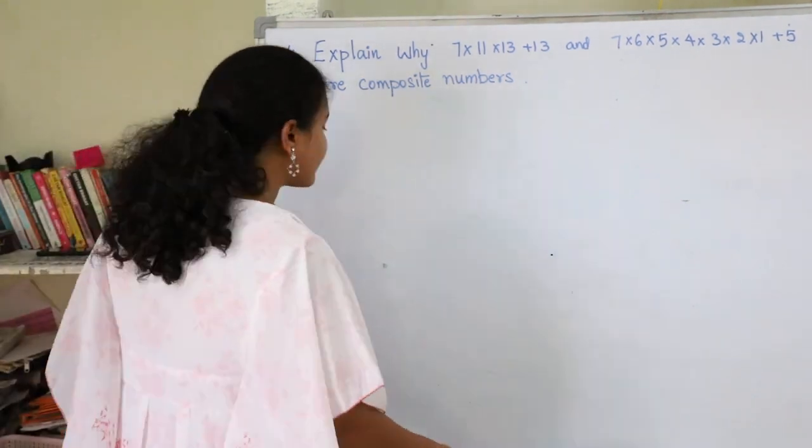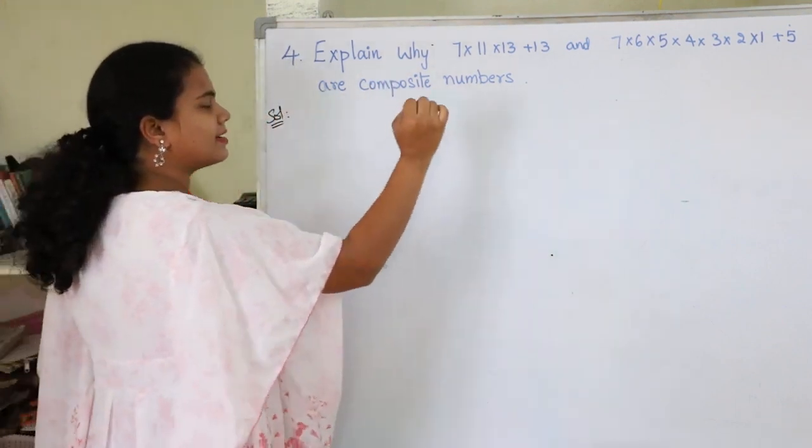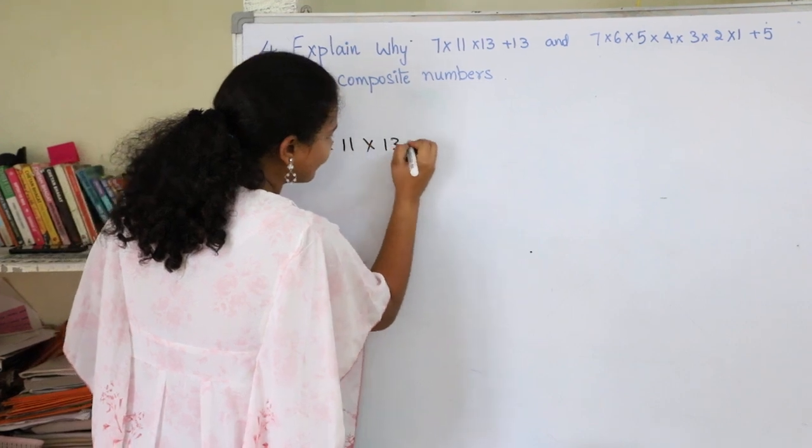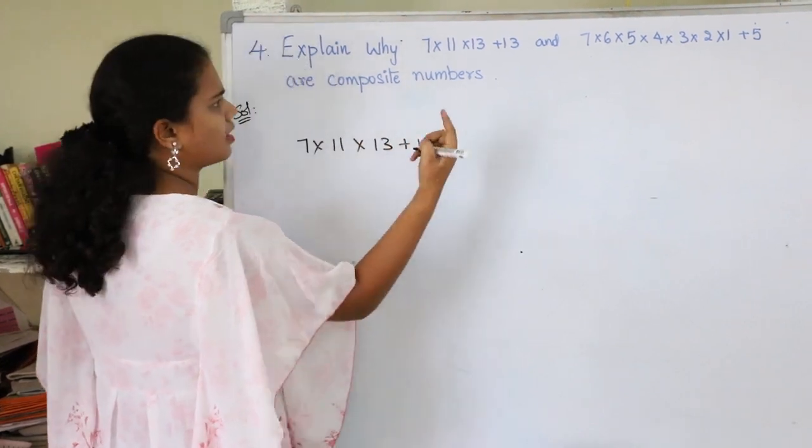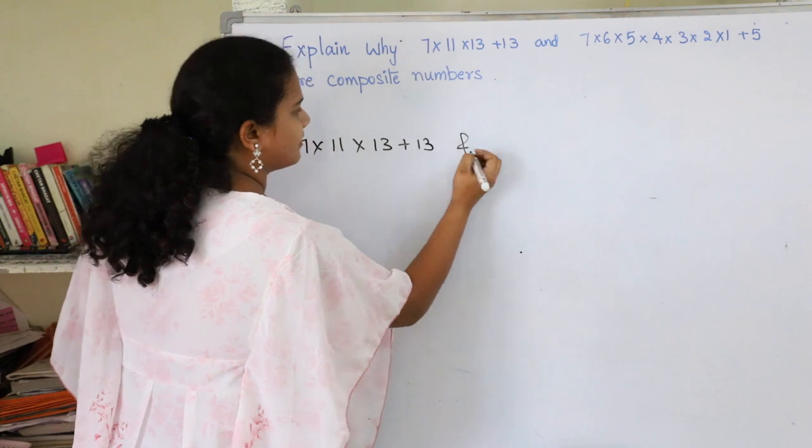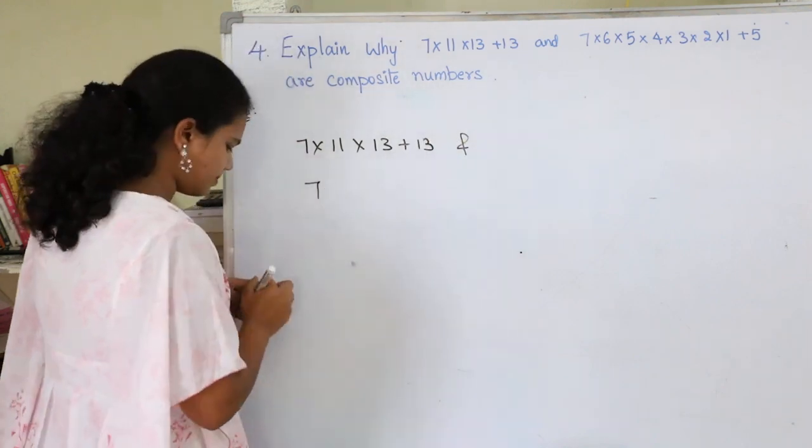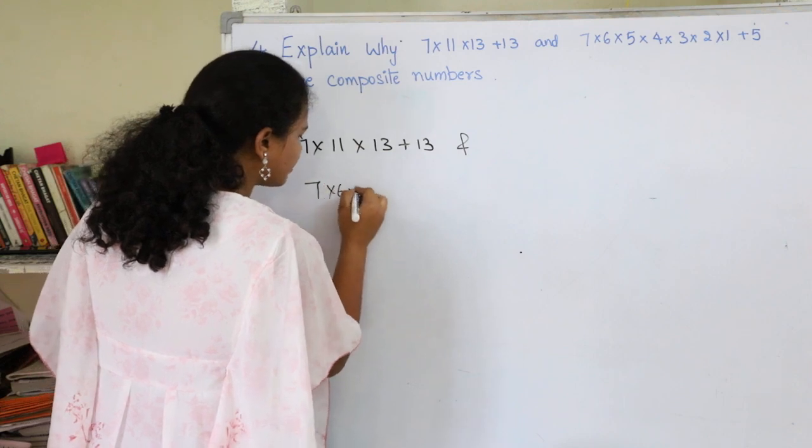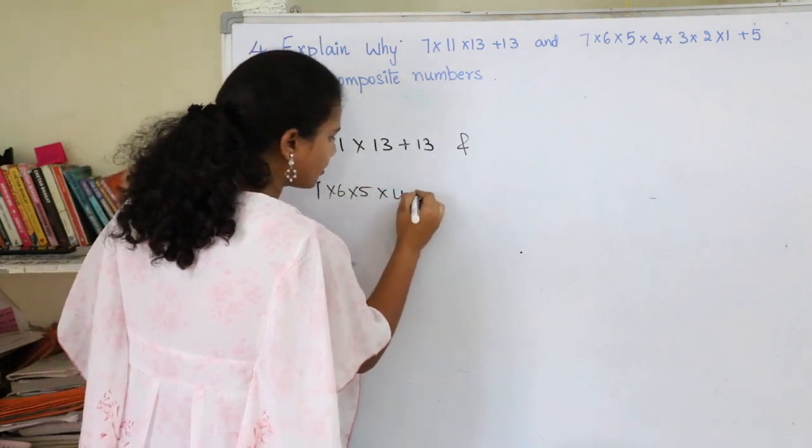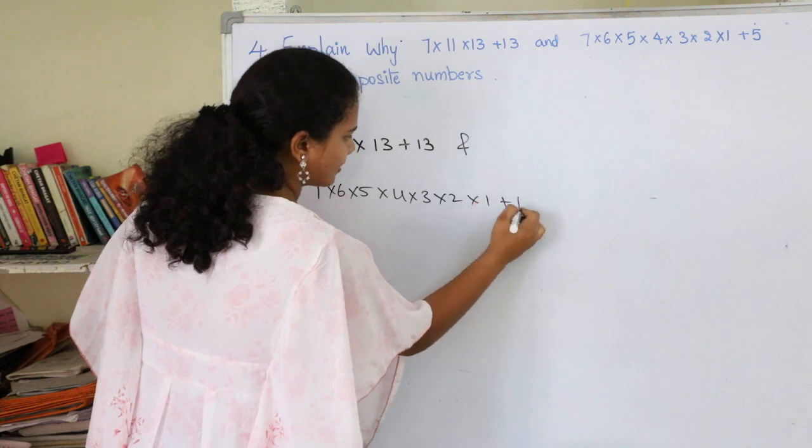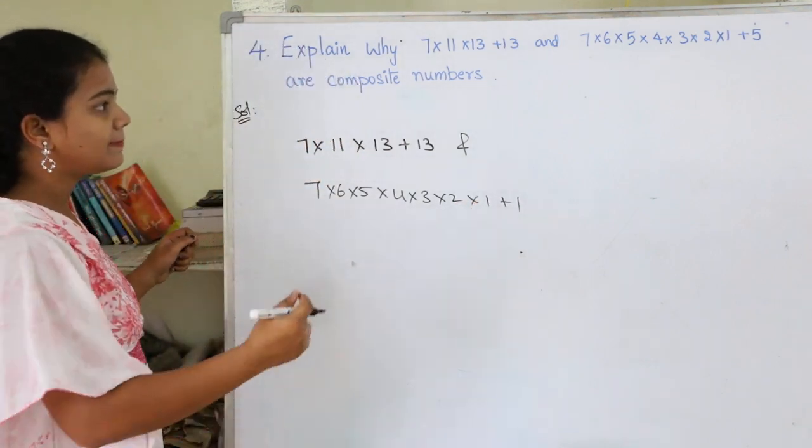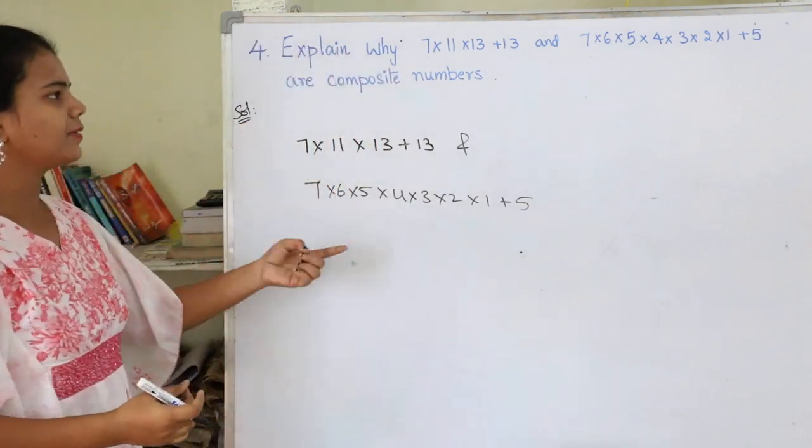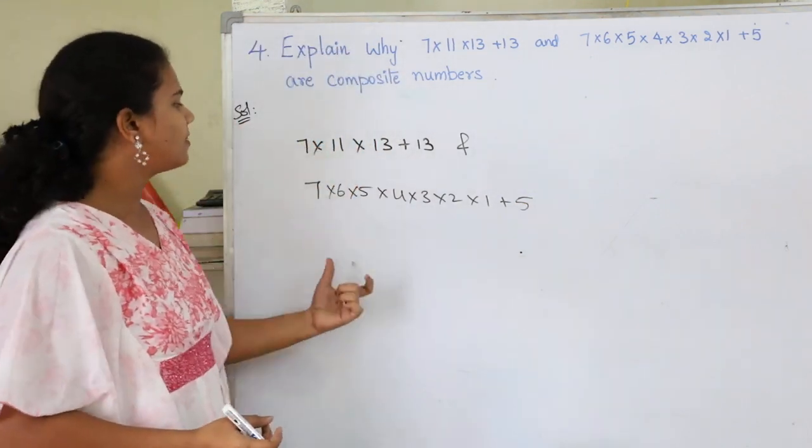To find this, let's solve the given question. Let's write down the numbers as given. First, 7 × 11 × 13 + 13, and second, 7 × 6 × 5 × 4 × 3 × 2 × 1 + 5. Now to solve this, let's take common factors in both numbers.